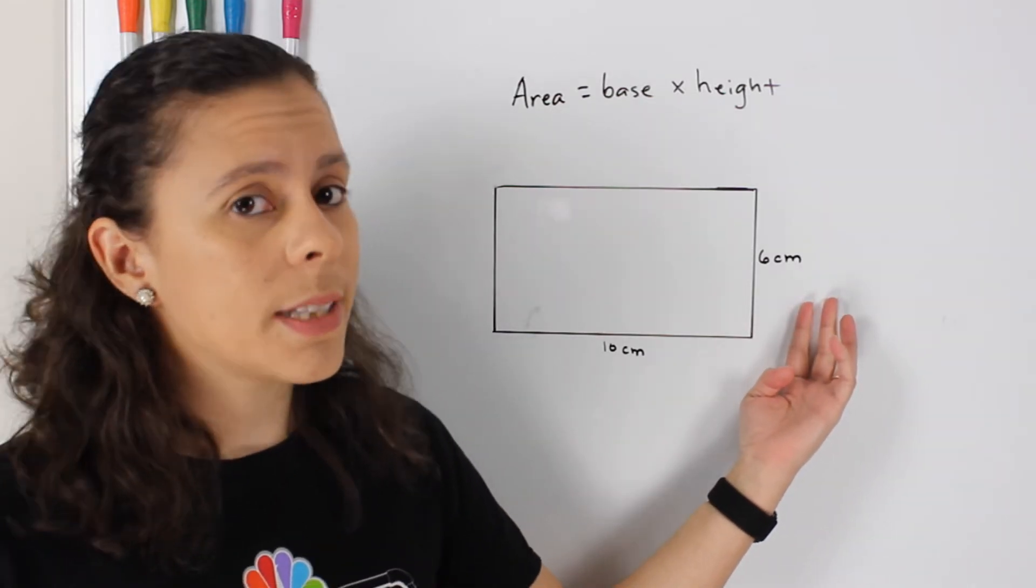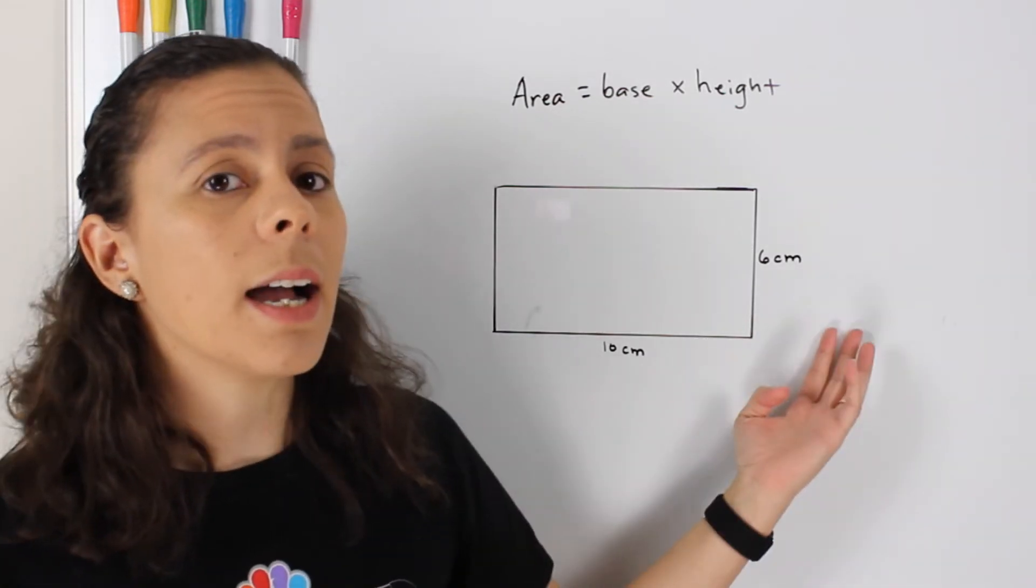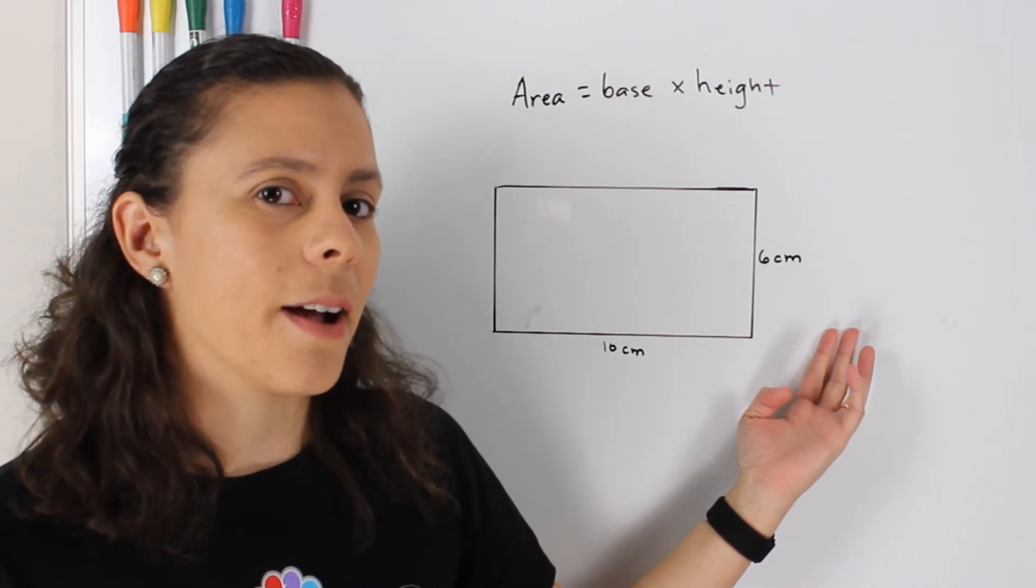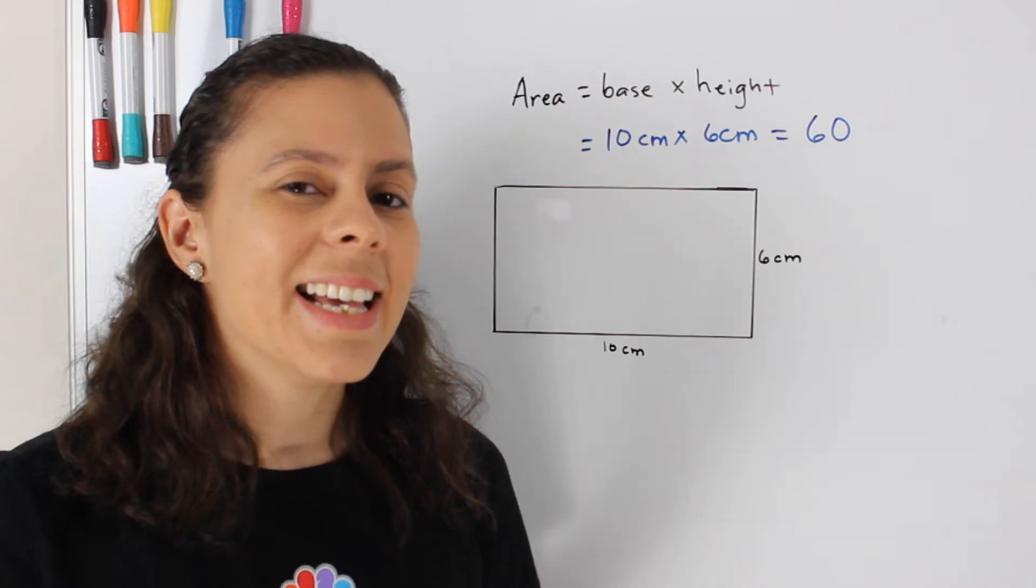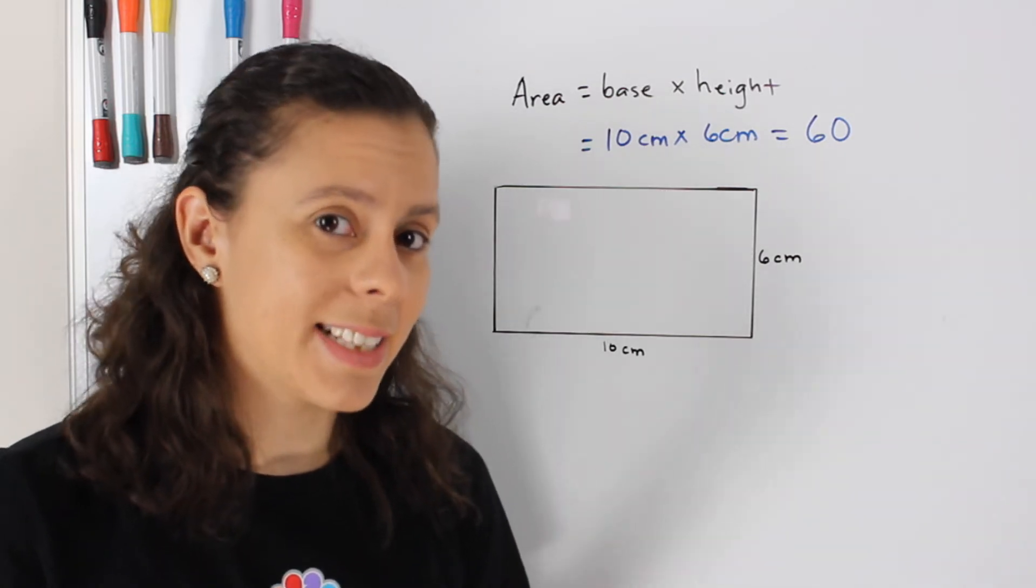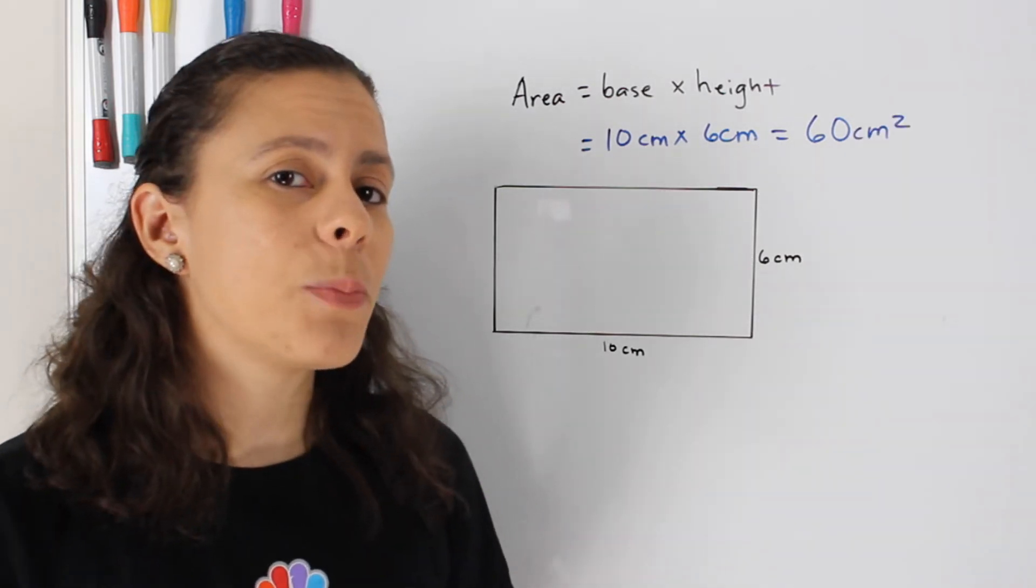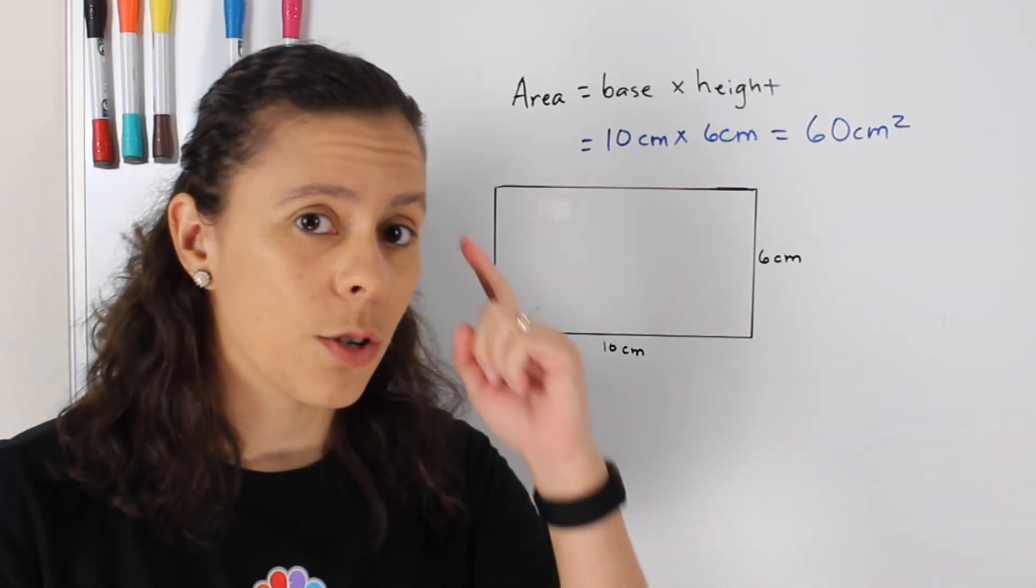So all we're going to do is simply multiply 10 times 6 and that's going to give us the area. So we find that the area is 60, but 60 what? 60 squared centimeters. And that's because you also multiply the units. Don't forget that.